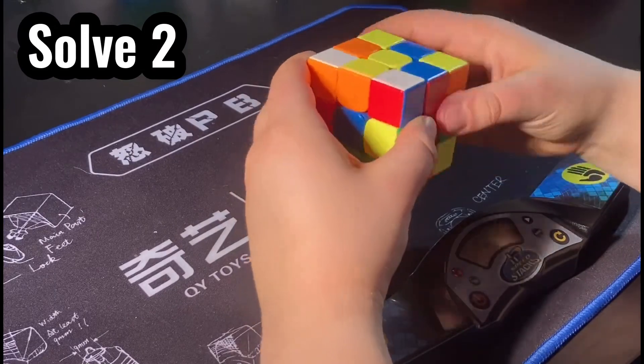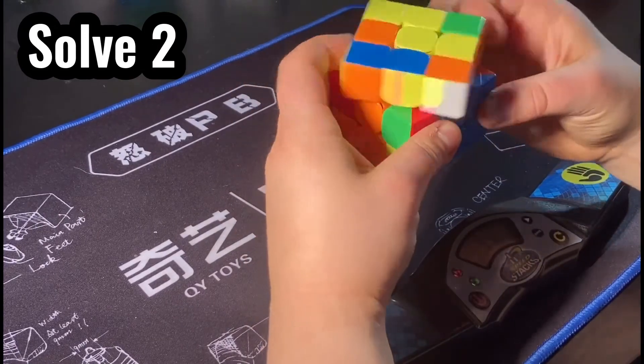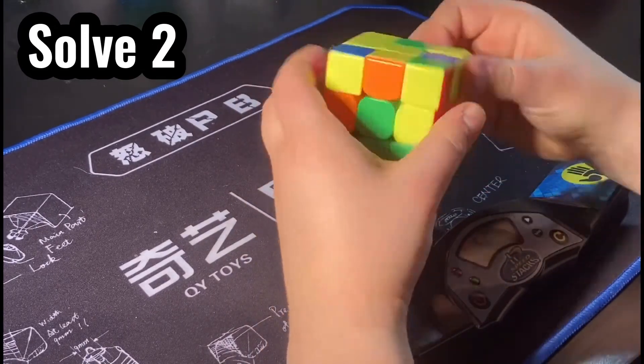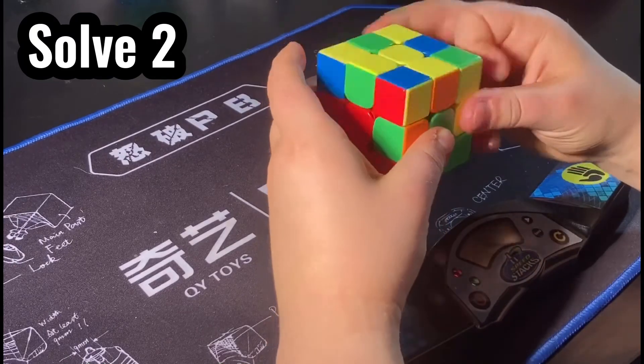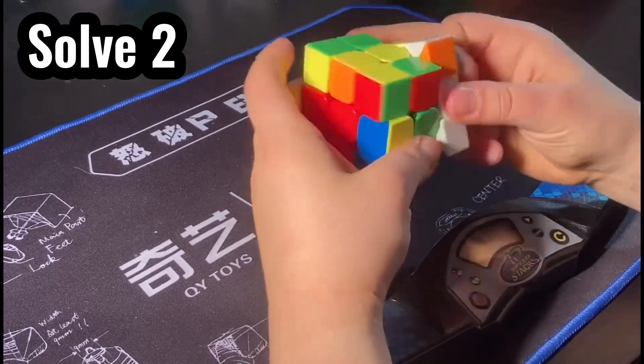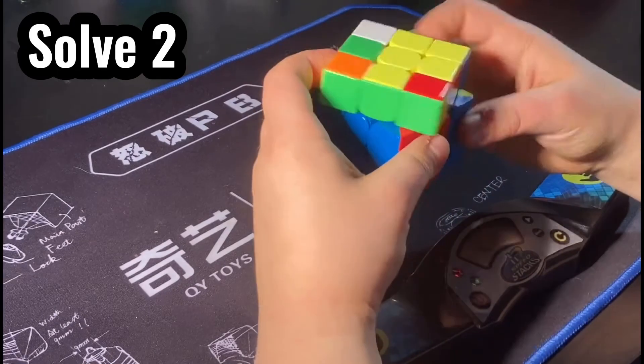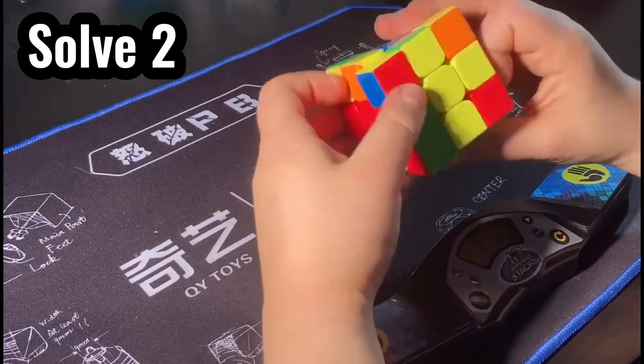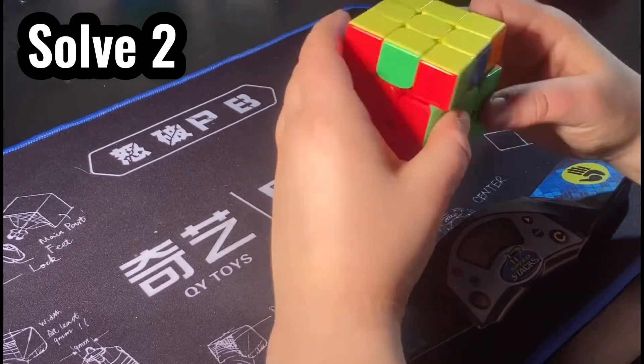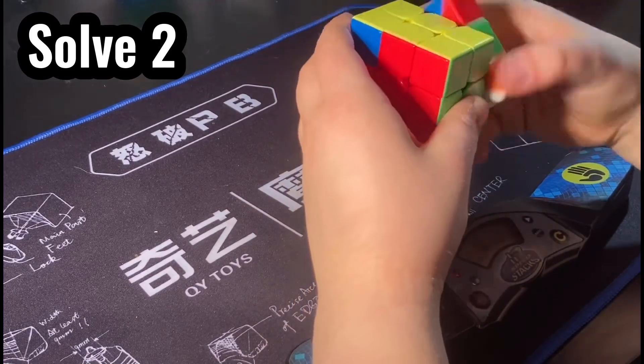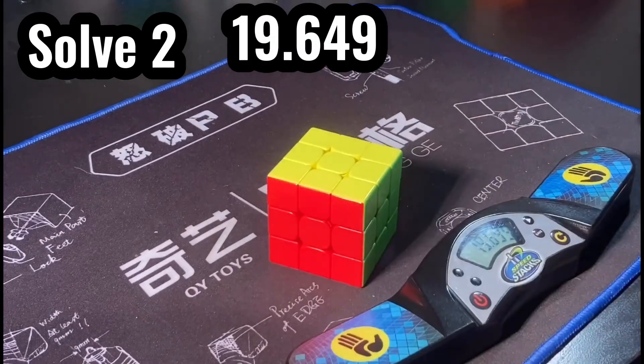My cross, a pretty lucky scramble, a very nice cross, a very good first pair, a decent second pair. And then here's where I don't do so well. My third and fourth pair aren't exactly the best. As you can see, I'm not doing them too well. Then we have a standard OLL and then a G perm for a total of 19.649.